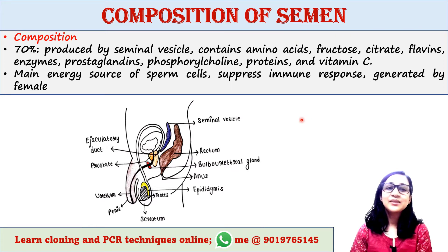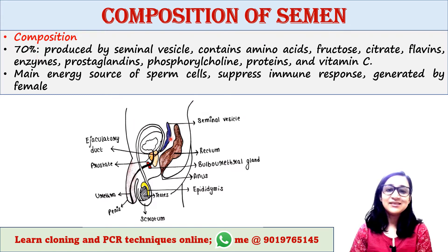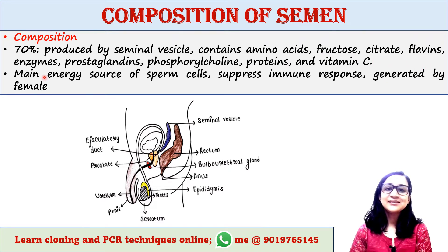70% of the fluid of semen is produced by the seminal vesicle. It contains amino acids, fructose, citrate, flavenes, enzymes, prostaglandins, phosphorylcholine, proteins, and vitamin C.